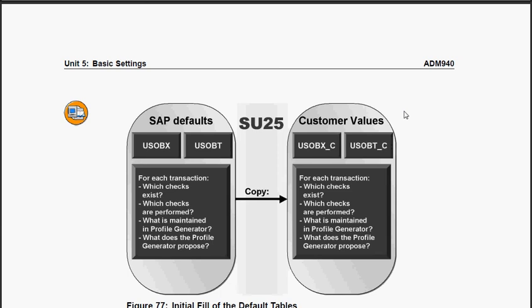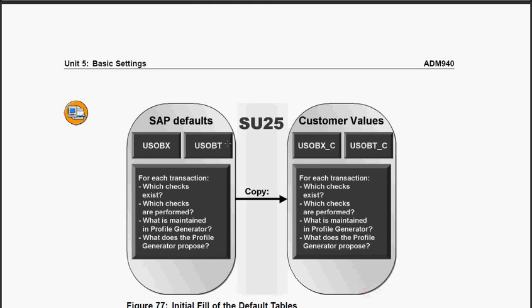We want to further explain the concept of SU-25. When you run SU-25 for the very first time, you have SAP tables USOBX and USOBT. These are what are called pristine SAP tables, which come preloaded with the basic SU-24 settings — meaning the transaction to object combination — which gets into PFCG.